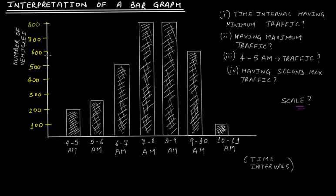The first question is: tell the scale. The scale is the unit length on the vertical or horizontal line. Here, the values on the vertical axis represent number of vehicles. Starting from 0, we have 100, 200, 300, 400. The difference between any two consecutive numbers is always 100 — 200 minus 100 is 100, 300 minus 200 is 100, 400 minus 300 is 100. Therefore, each unit length represents 100 vehicles. That is the scale.